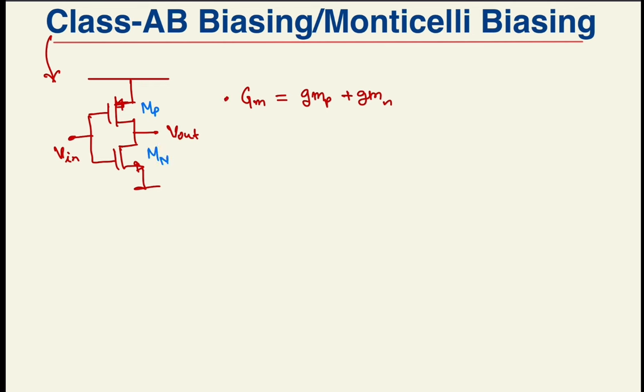While discharging the output, meaning when VIN goes higher, the PMOS current also reduces. In the previous case, the PMOS current was fixed at IB. So if we figure out a way to bias this output stage, such that we have a low quiescent current, then we have something really cool.